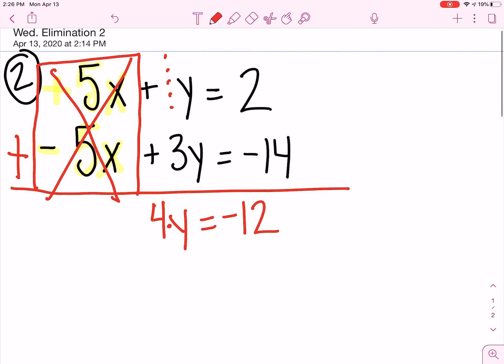Since that's a multiplication, to undo this, I must divide. y equals negative 3.